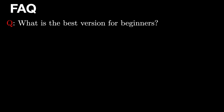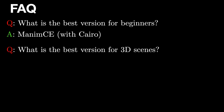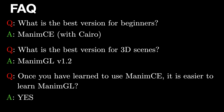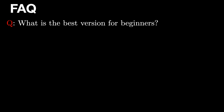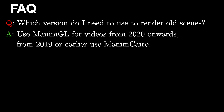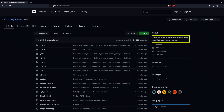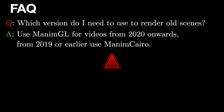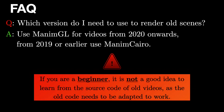Let's take a look at the most frequently asked questions. The best version to start learning Manim is undoubtedly Manim CE with Cairo. The best version for creating 3D animations is Manim GL 1.2. Once you've learned how to use Manim CE, it is very easy to switch to Manim GL. In case you want to render old Grant Sanderson videos, you can see most of the code in this repository. If you are a beginner, it is not a good idea to learn from the source code of old videos, as the old code needs to be adapted to work.